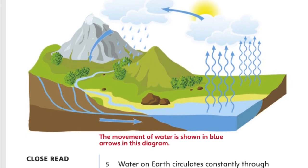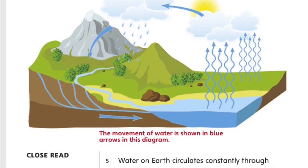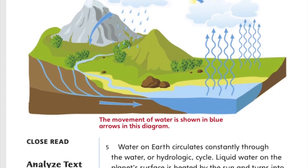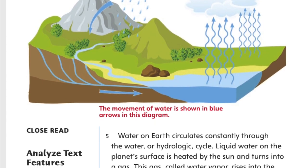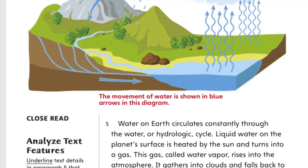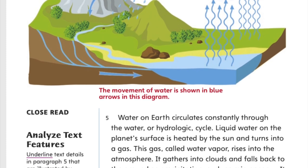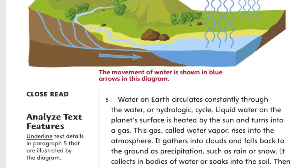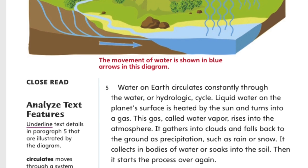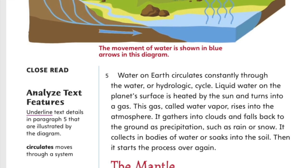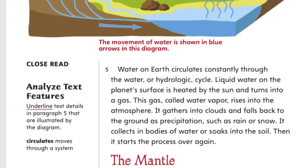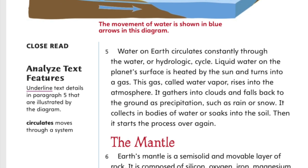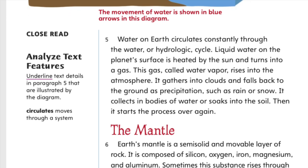Liquid water on the planet's surface is heated by the sun and turns into a gas. This gas, called water vapor, rises into the atmosphere. It gathers into clouds and falls back to the ground as precipitation, such as rain or snow. It collects in bodies of water or soaks into the soil. Then it starts the process over again.